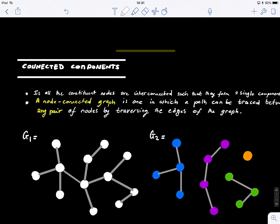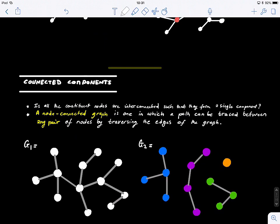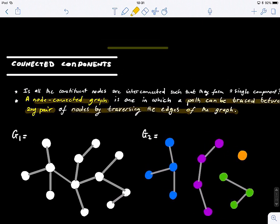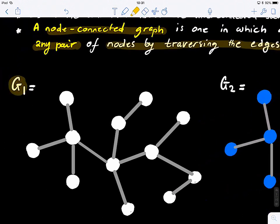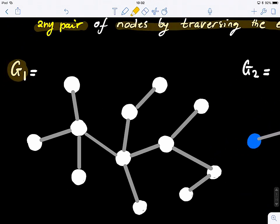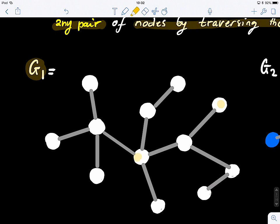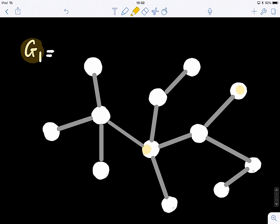So if you look at this figure, here we do have a graph. So we say a node connected graph is a graph that has a path that can be traced between any pair of nodes by traversing the edges of the graph. So in this example, let's look how many nodes connected. Let's look at the first one, G1. So is this graph node connected? So the definition is that if I select any two nodes, random nodes in this graph, I can easily find a path that connects them. So is G1 a node connected graph? Like if you take any two random nodes, you can always find a path that connects them. Is that true? Yes.